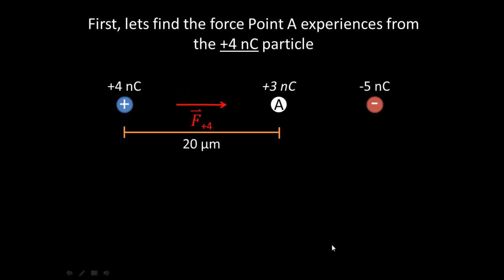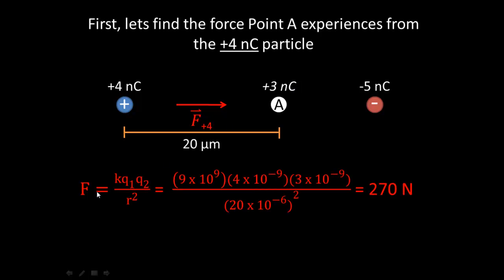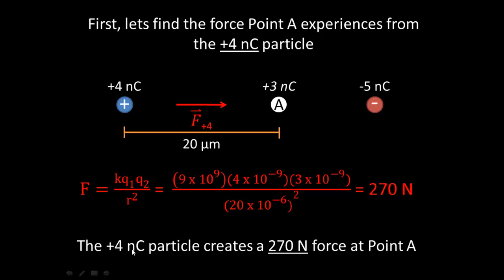Let's solve for the force acting on point A from the plus 4 nanocoulomb particle, which is 20 micrometers away. Using Coulomb's law: F equals 9 times 10 to the 9th, times 4 times 10 to the negative 9th, times 3 times 10 to the negative 9th, over (20 times 10 to the minus 6th) squared. Carrying out the math, the force acting on point A from the plus 4 nanocoulomb particle is 270 newtons.